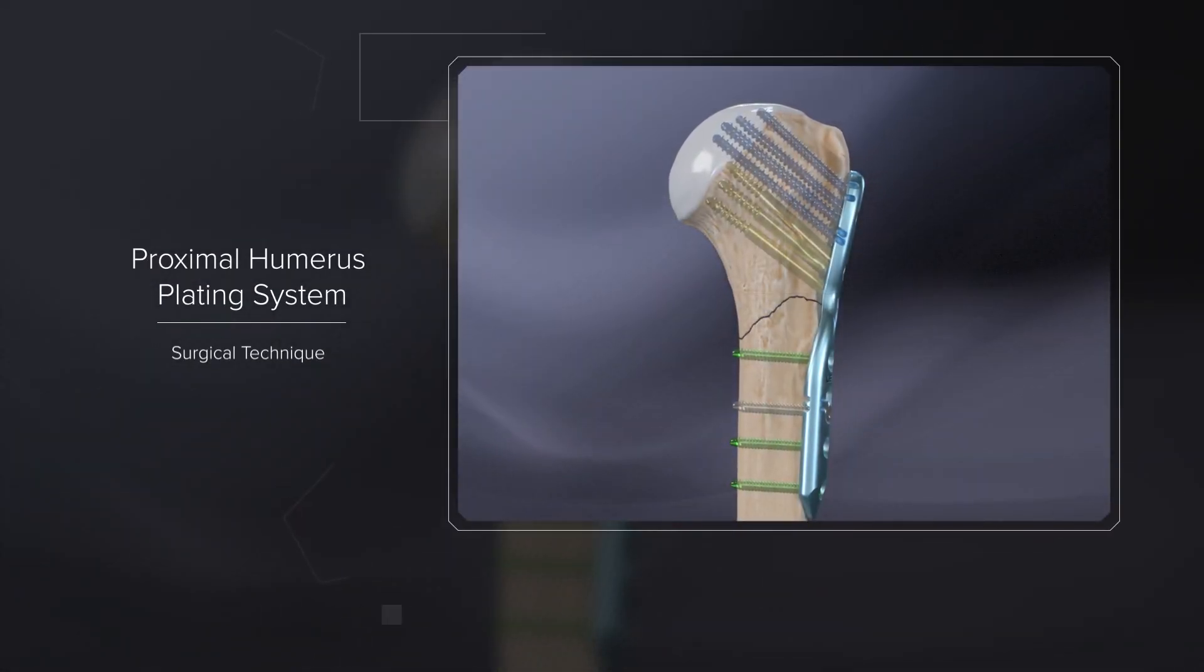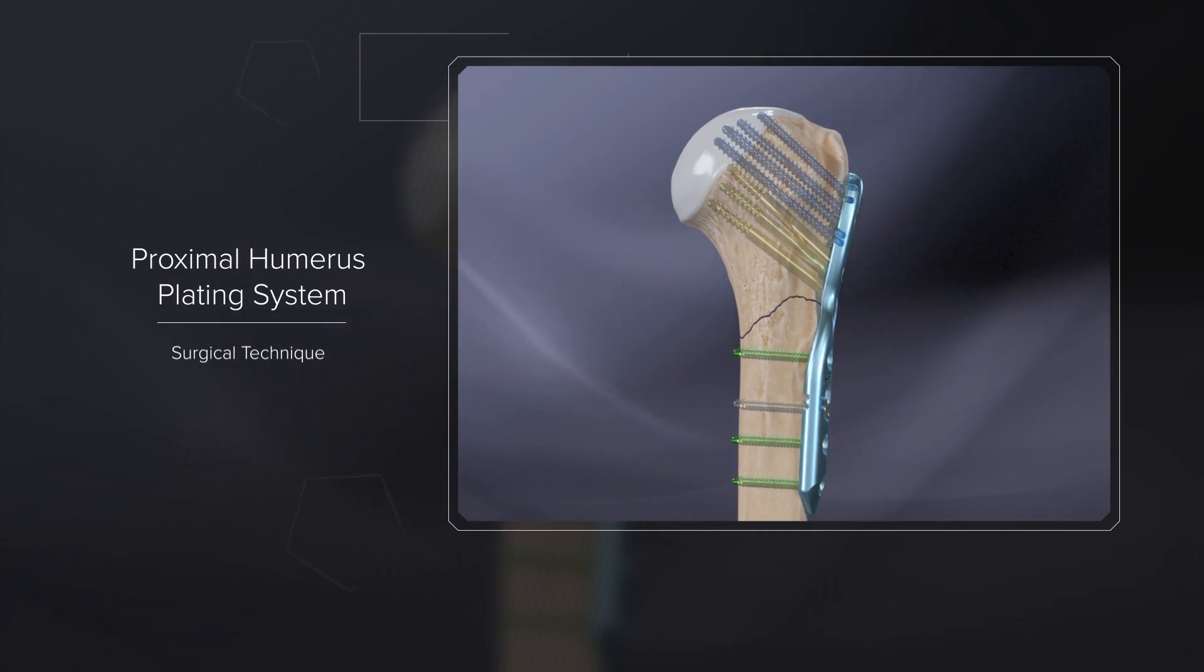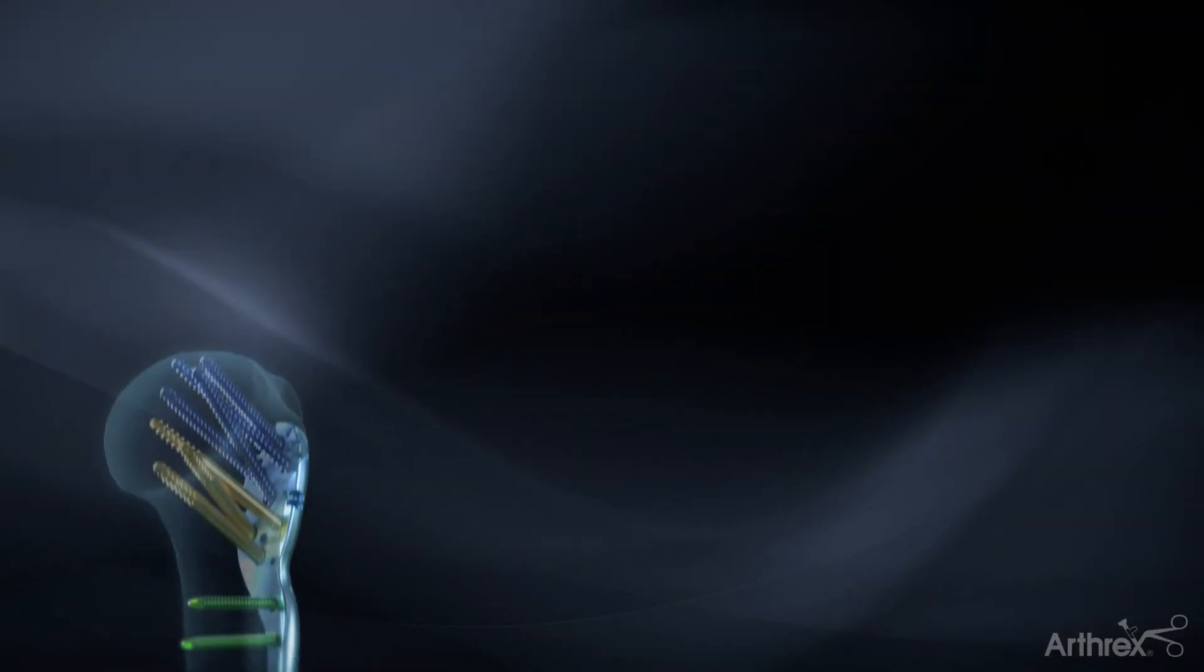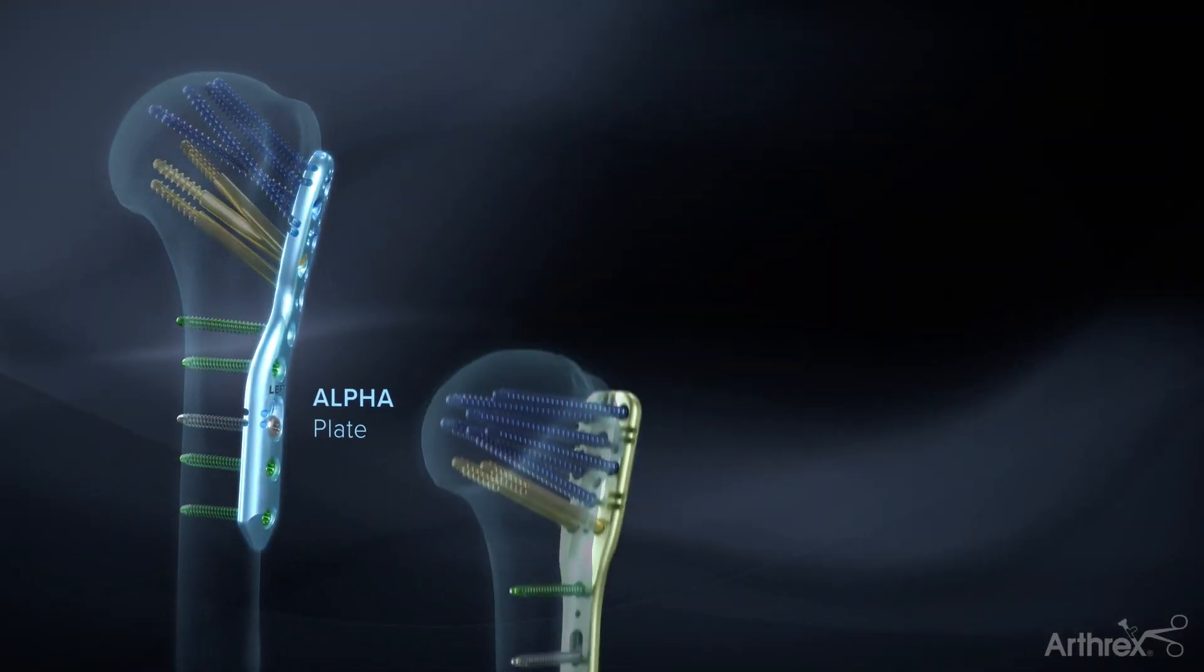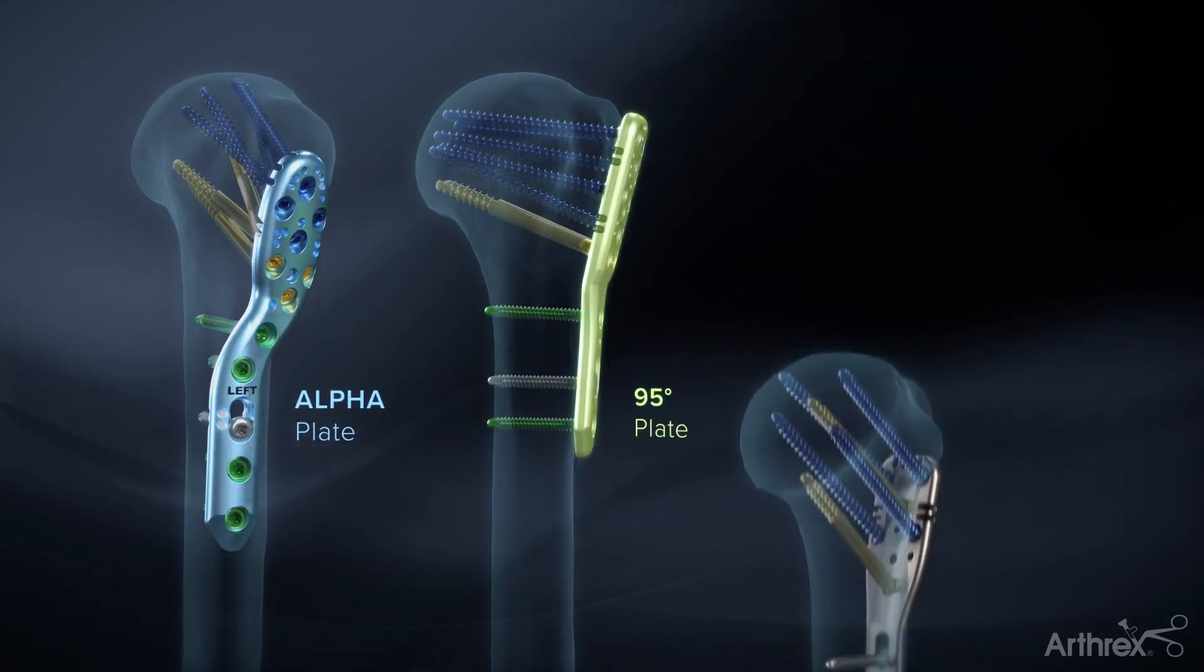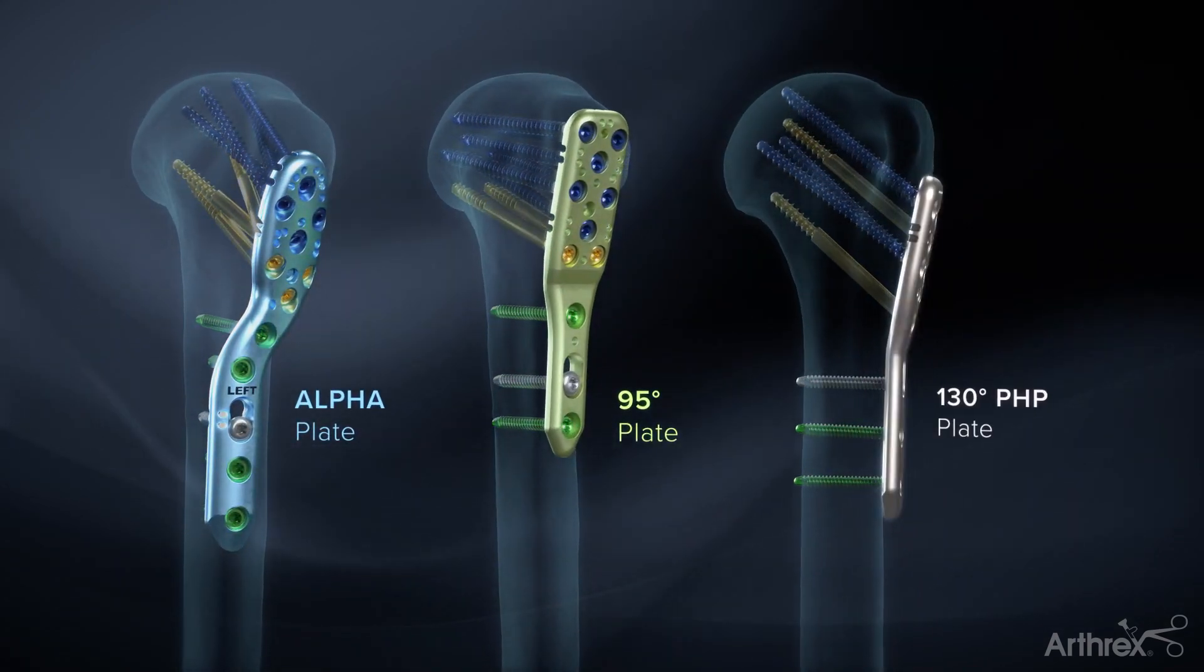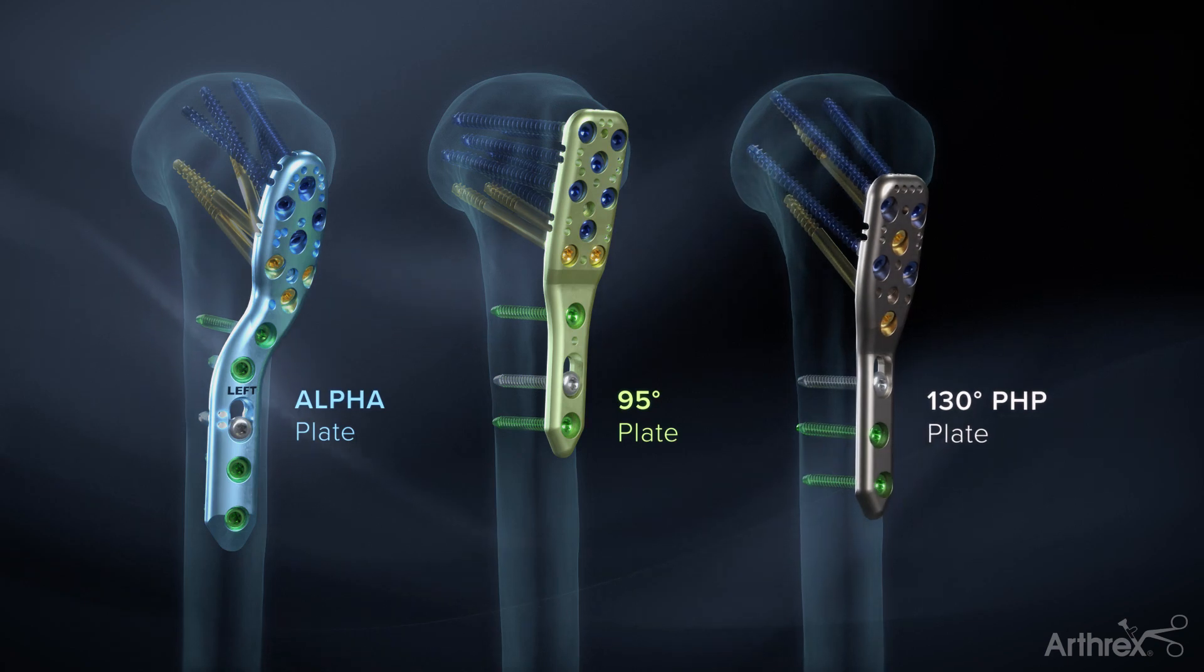The Arthrox Proximal Humerus Plating System is intended to treat a variety of fractures of the proximal humerus. The system features the alpha anatomic plate, 95 degree buttress plate, and the 130 degree proximal humeral plate.